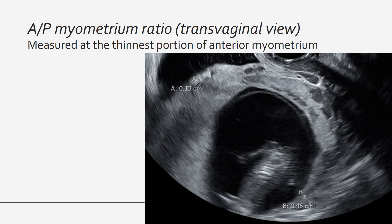The fourth marker is a small anterior to posterior myometrium ratio. This is obtained from a transvaginal scan, which is especially important in early diagnosis of cesarean scar ectopic pregnancies. The myometrial thickness is measured at the thinnest portion of the anterior myometrium, perpendicular to the bladder and uterine interface. The posterior myometrium thickness is measured at the same level on the posterior wall. In this scan, the anterior myometrial thickness is 1.3 millimeters and the posterior is 4.5 millimeters, giving a calculated AP myometrium ratio of 0.18.